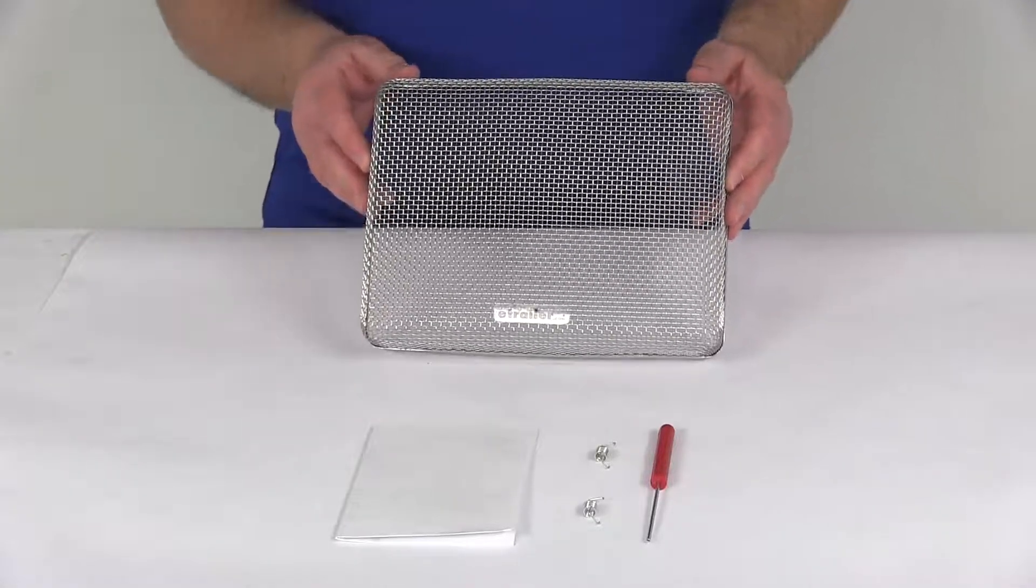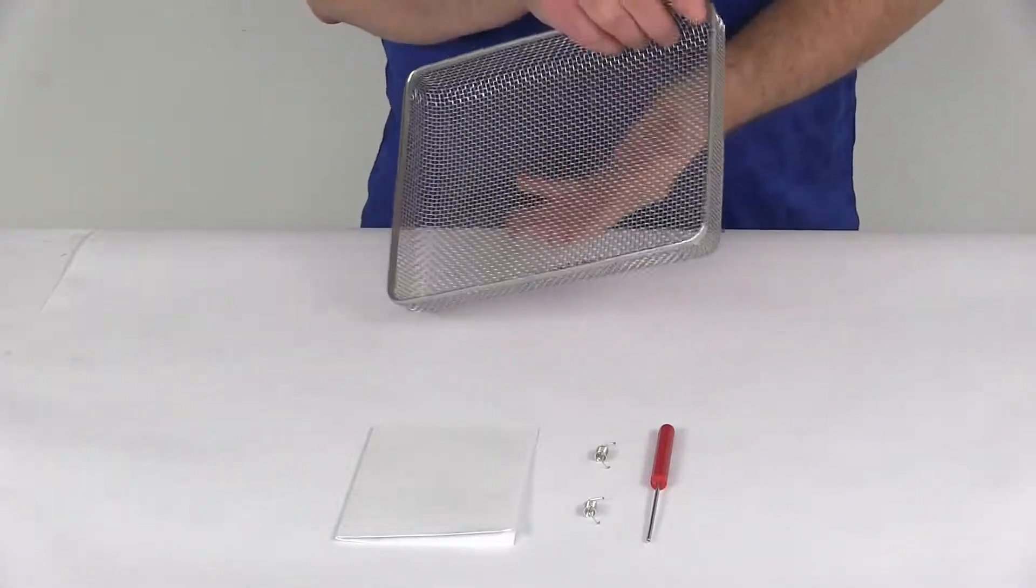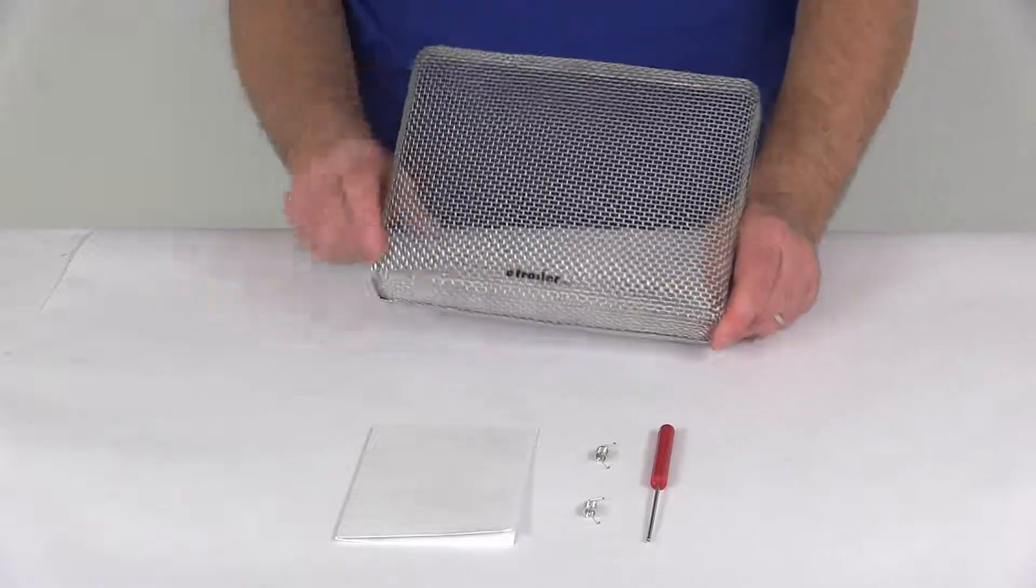Today we're going to take a look at the Valterra bug screen for the Suburban RV water heater vents. This Valterra bug screen is for your RV water heater.